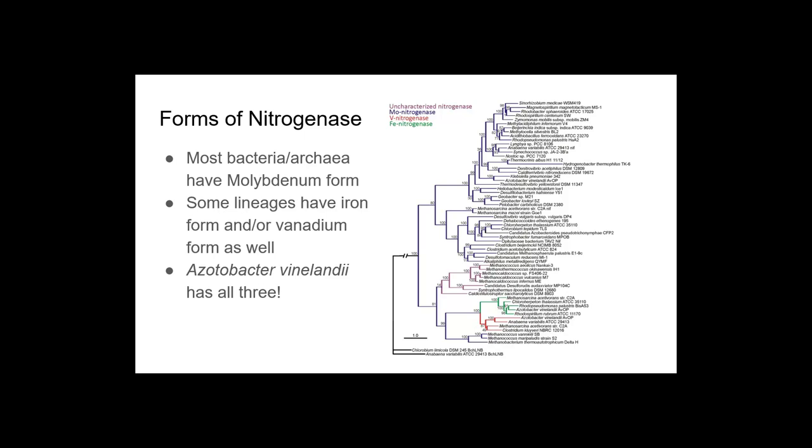In addition to the molybdenum form of nitrogenase, some lineages of bacteria and archaea have additional forms that lack molybdenum but use iron and or vanadium. The important thing is that these other lineages also have the molybdenum form. In some cases like the very famous research nitrogen fixer Azotobacter vinelandii, they have all three forms. Azotobacter vinelandii, when it has access to sufficient molybdenum, will produce the molybdenum containing nitrogenase enzyme. And then once it uses up all of the molybdenum, then it will switch to the vanadium. If there's vanadium, they'll use up all the vanadium and then it'll switch to producing the iron only. So they just want to fix as much nitrogen as they can.